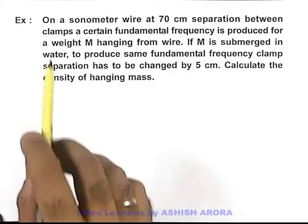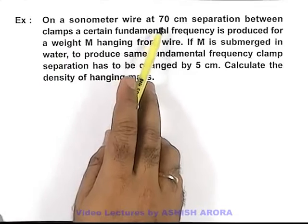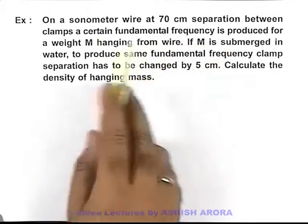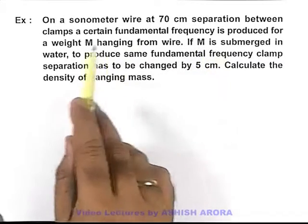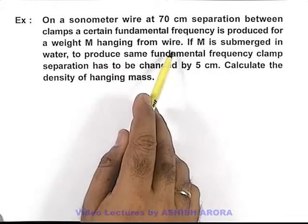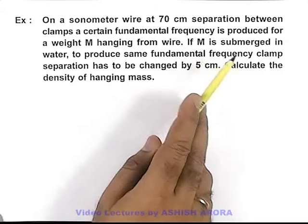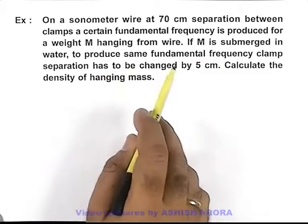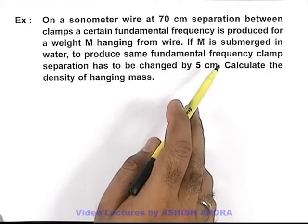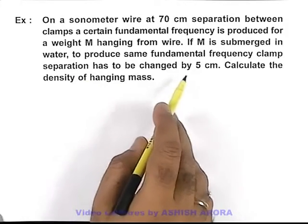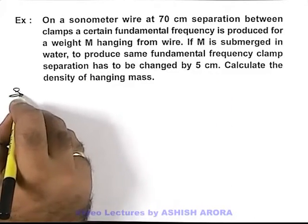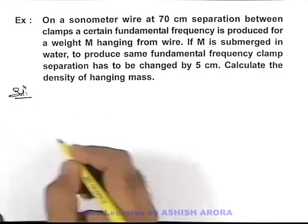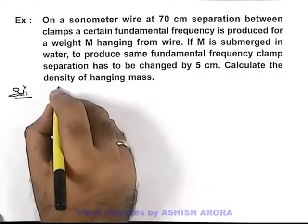In this example, on a sonometer wire at 70 centimeter separation between clamps, a certain fundamental frequency is produced for a weight M hanging from the wire. If M is submerged in water to produce the same fundamental frequency, clamp separation has to be changed by 5 centimeters. We are required to calculate the density of hanging mass.